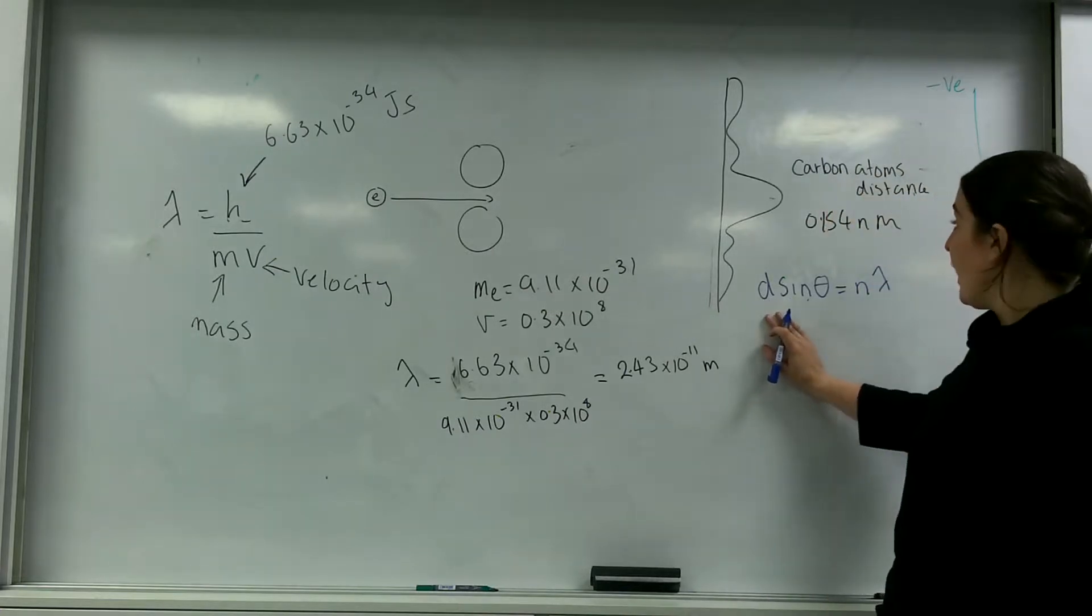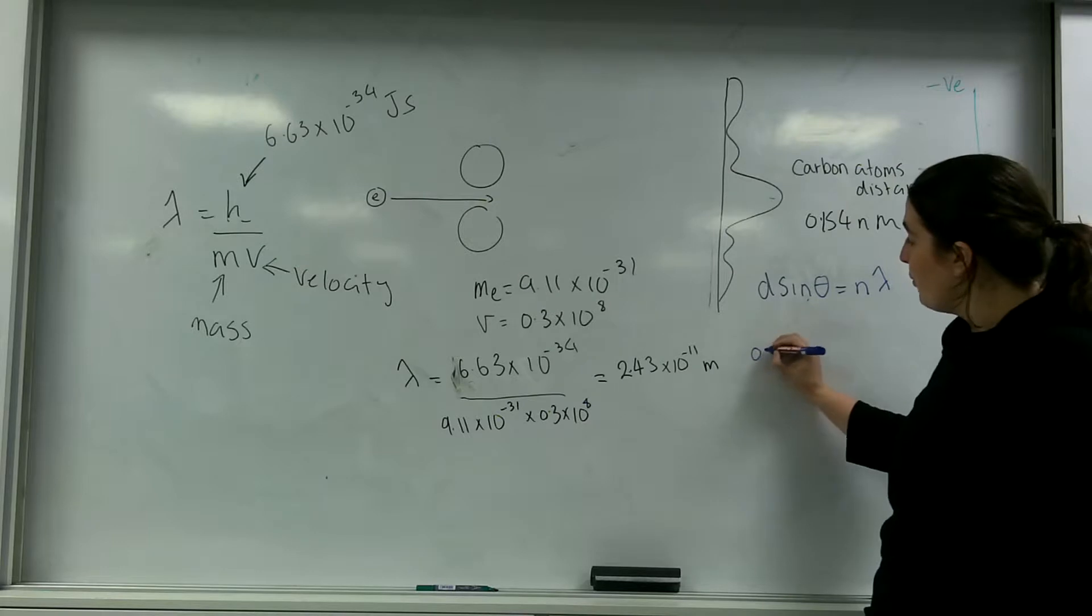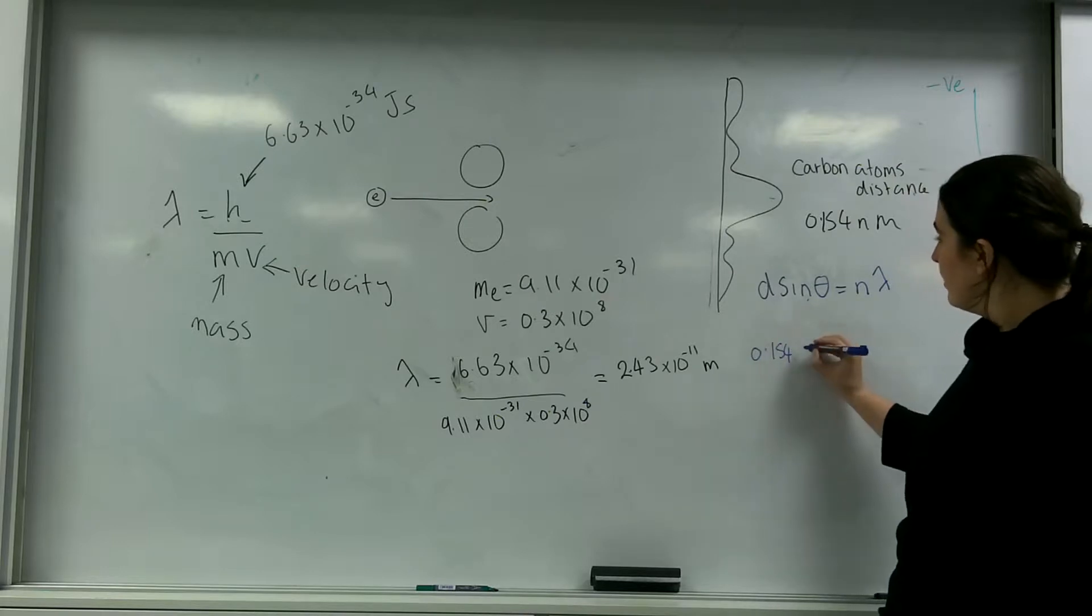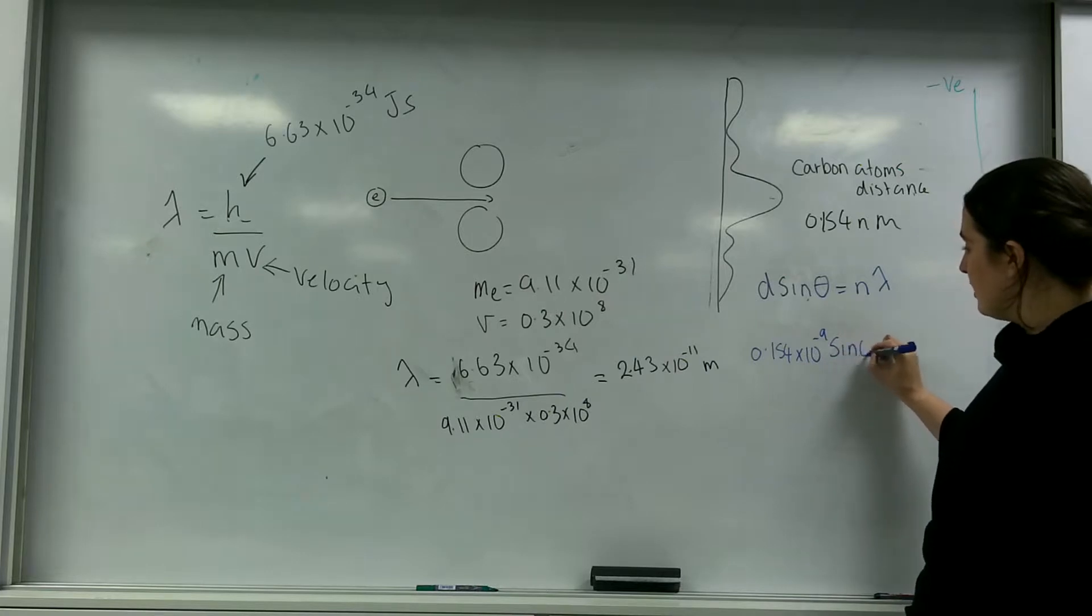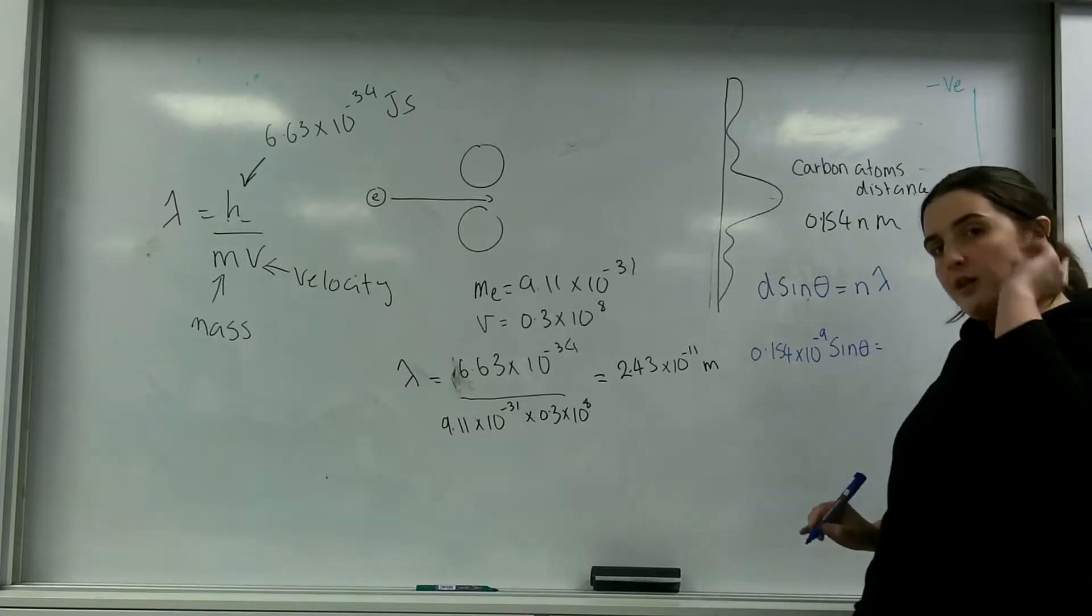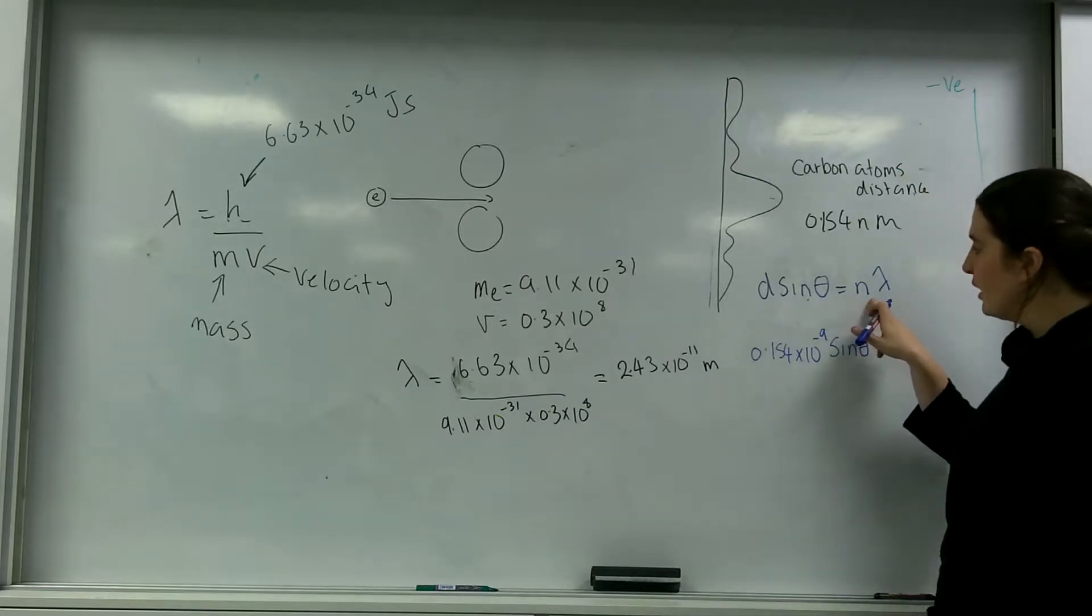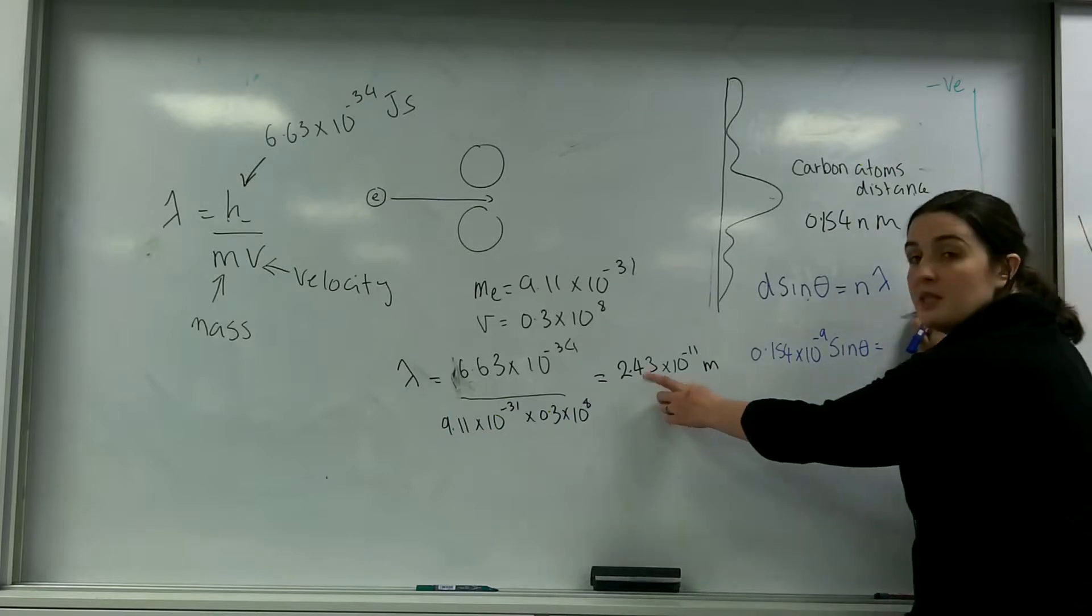d is the distance between the gaps. I'm going to use this one here: 0.154 times 10 to the minus 9 sin theta. It's the first maxima, so n will be 1. And the wavelength is going to be this one here.